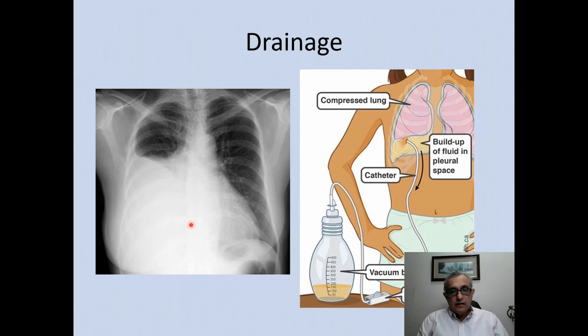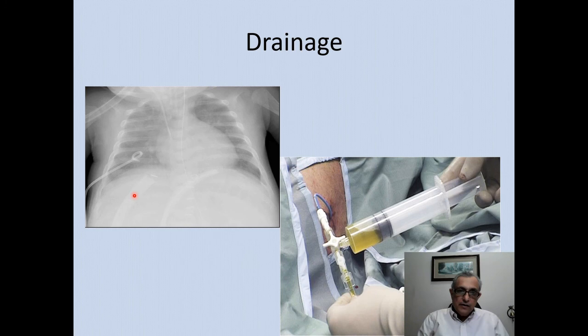One common complication of malignancy is fluid within the pleural cavity, which compresses the lung and causes difficulty in breathing. This is what the chest X-ray looks like — fluid within the right pleural cavity. A pigtail catheter is placed into the pleural cavity to drain the fluid, after which the fluid is no longer visible on imaging.